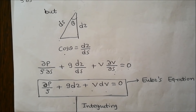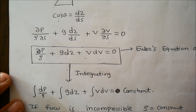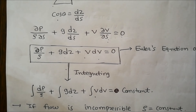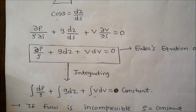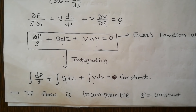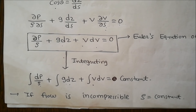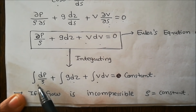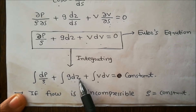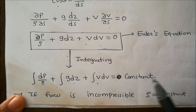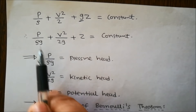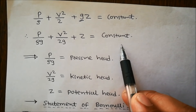Our target is to derive Bernoulli's equation, so we integrate Euler's equation: ∫dP/ρ + ∫g·dz + ∫V·dV = 0. Assuming the flow is incompressible, density ρ is constant. So we get: P/ρ + g·z + V²/2 = constant. Dividing by g: P/(ρg) + V²/(2g) + z = constant.